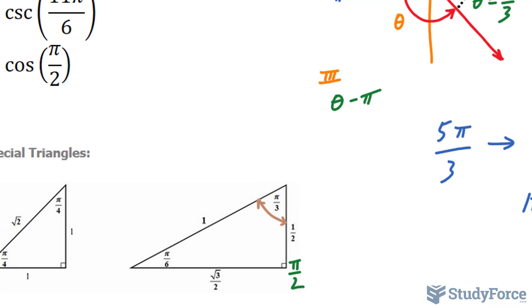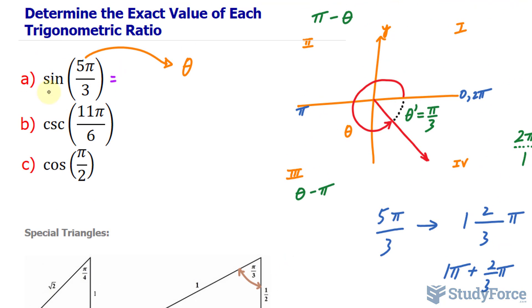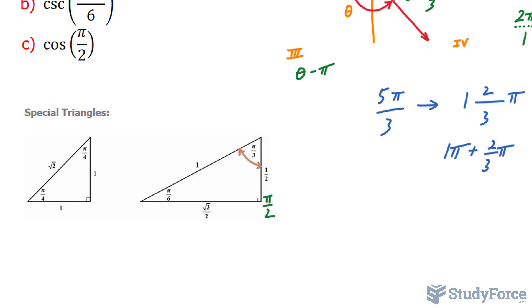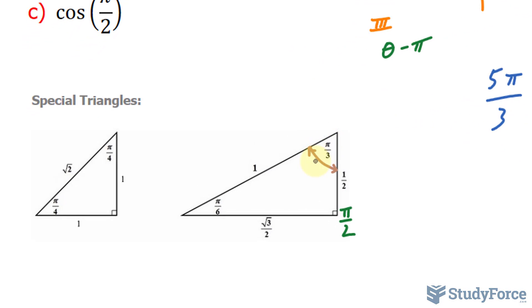Remember, sine, which is the trigonometric function associated with the angle, is equal to the opposite over the hypotenuse. You should know this relationship. Opposite over hypotenuse. So opposite of π over 3 is the square root of 3 over 2.